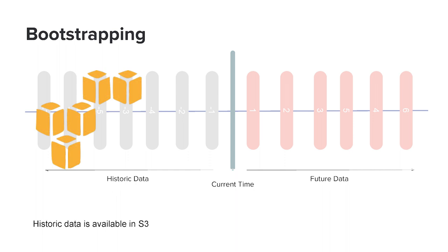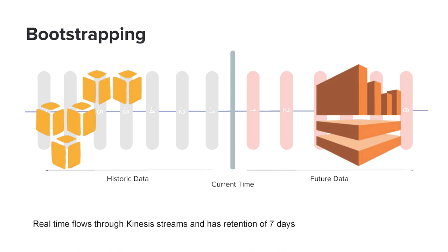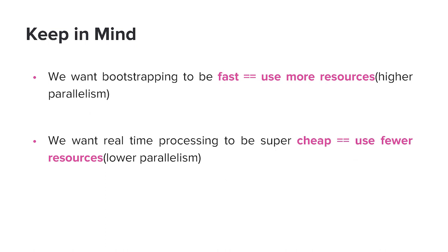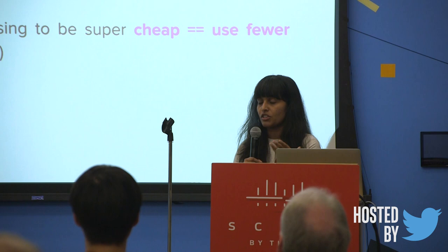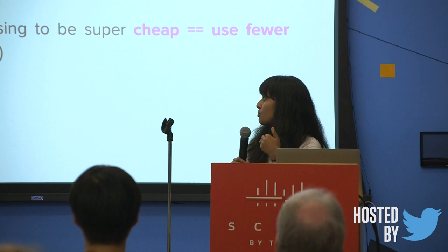At Lyft, historic data is stored in S3 and live events come in through Kinesis pipelines. But Kinesis has a retention period of seven days. So if the window is longer than seven days and we want to process historic data, we cannot rely on Kinesis alone — we also have to read events from S3. There were two requirements we had when building this. First, we want bootstrapping to be fast. When the program is bootstrapping, a bulk of data is being processed, so it can be slow, but we were willing to add more resources to make it go fast. Once bootstrapping is over and the program transitions to steady state processing live events, the amount of data being processed reduces and we want to reduce resources to save cost.